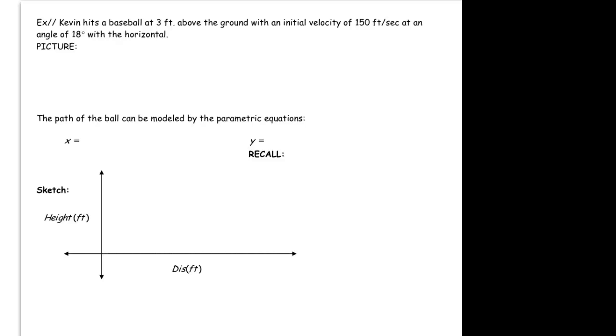Let's look at another projectile motion problem and this time we're actually going to answer some questions about the object that's projected. The situation is Kevin hits a baseball at three feet above the ground with an initial velocity of 150 feet per second.